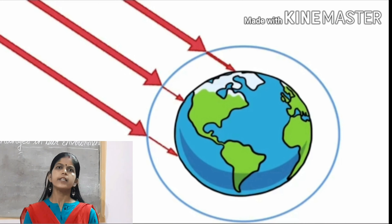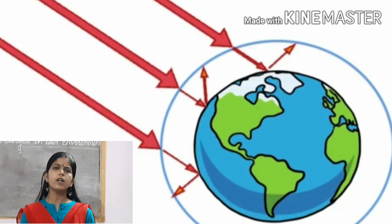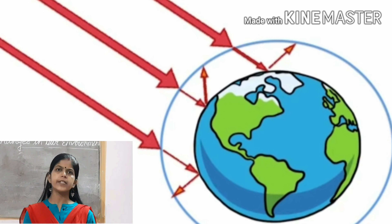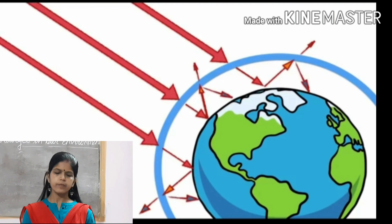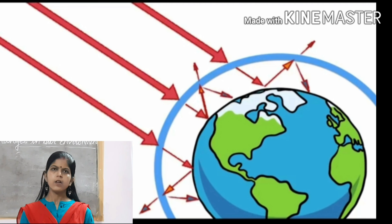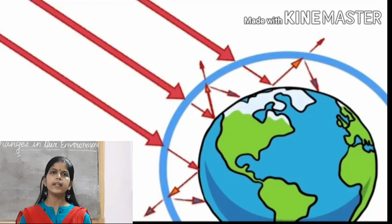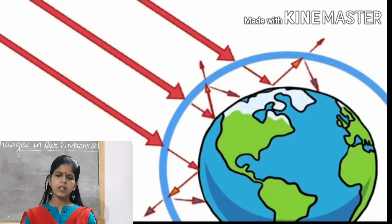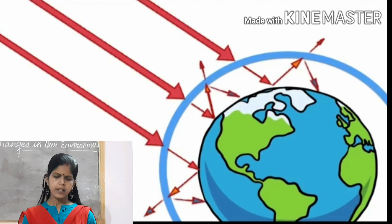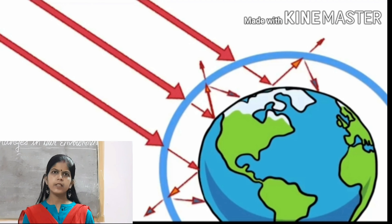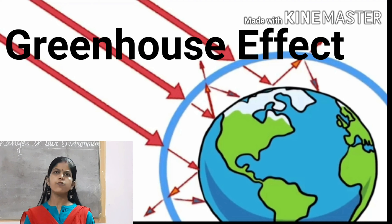The atmosphere of the Earth blocks the heat waves from the sun and allows sunlight to enter. The sunlight heats the surface of the Earth. At night, some of this heat is emitted back into space. However, a part of this heat is trapped by the atmosphere and this keeps the Earth warm and suitable for life. This phenomenon is called the greenhouse effect.